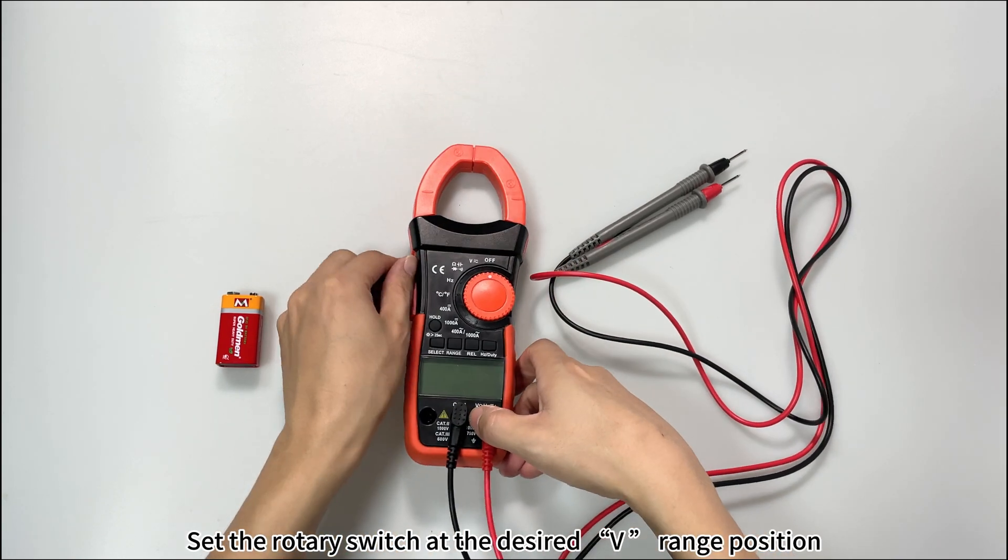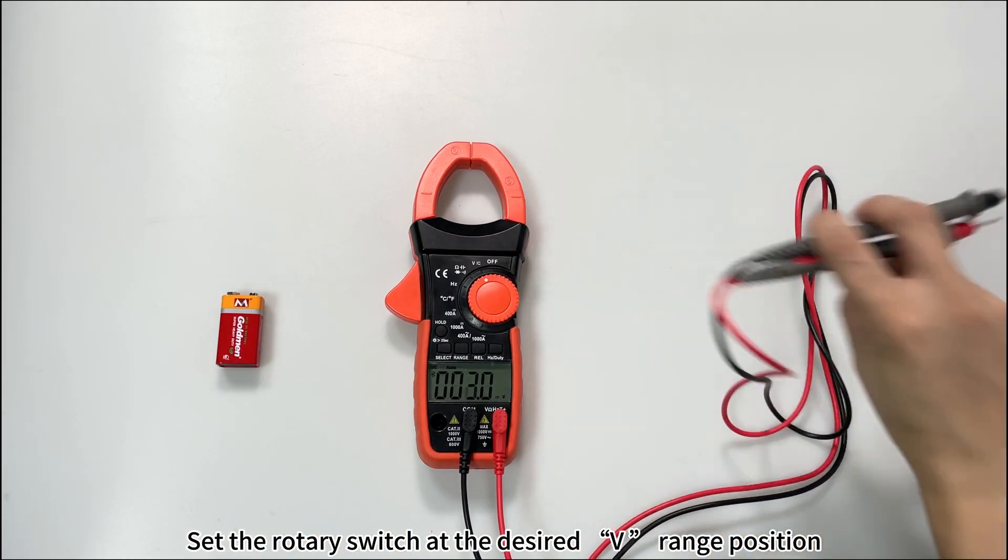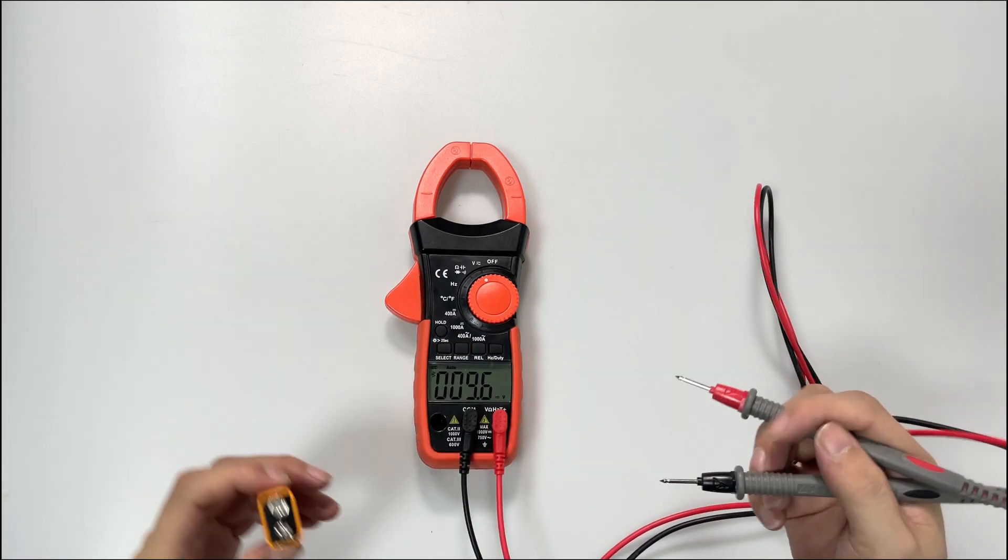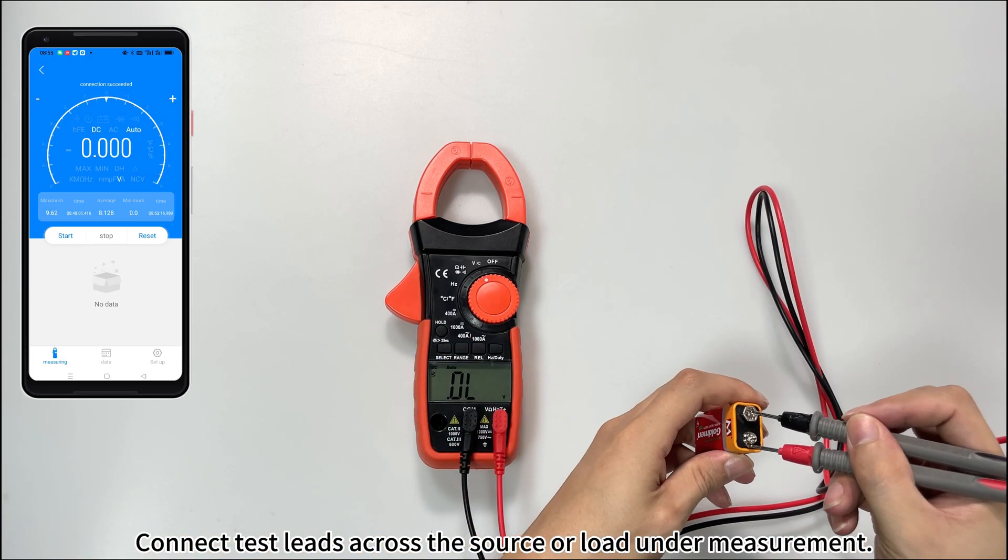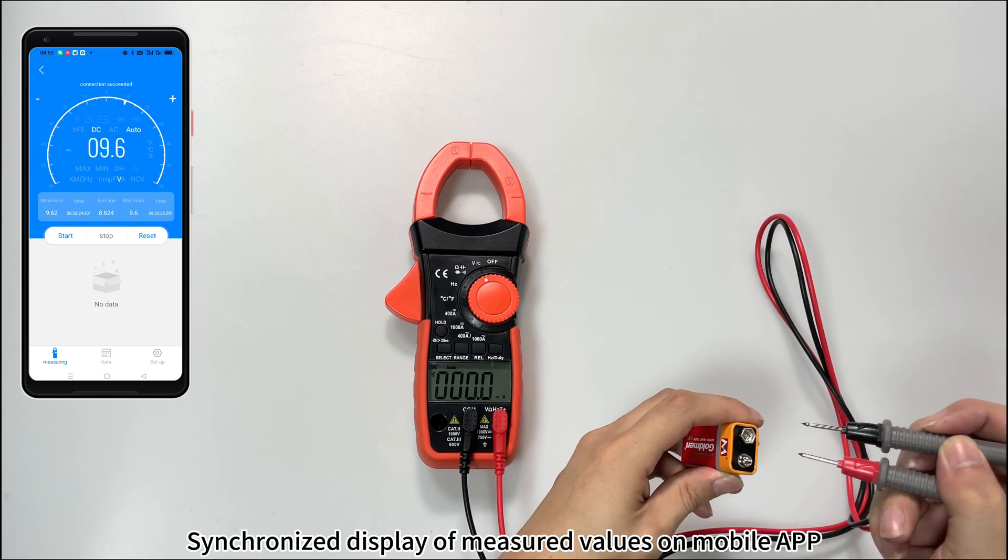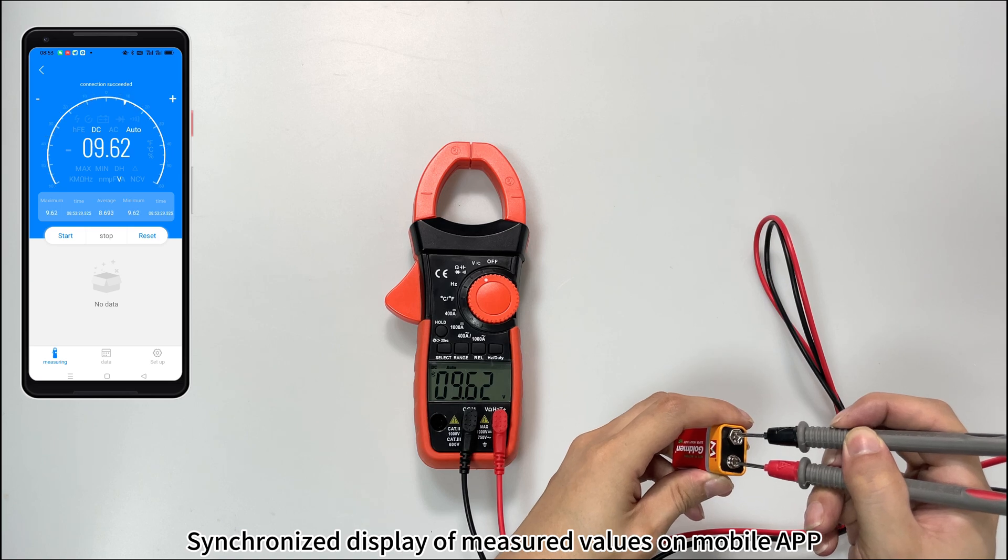Set the rotary switch at the desired V range position. Connect test leads across the source or load under measurement. Synchronize the display of measured values on the mobile app.